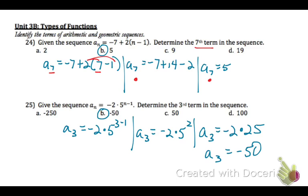On 25, we have the sequence a sub n equals negative 2 times 5 to the n minus 1. We want to determine the third term. So we're going to plug in 3 everywhere we see an n. So a sub 3 equals negative 2 times 5 to the 3 minus 1 power. So simplifying, a sub 3 equals negative 2 times 5 to the second power, or a sub 3 equals negative 2 times 25, or a sub 3 equals negative 50, which is choice B.